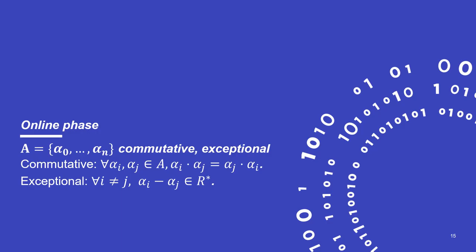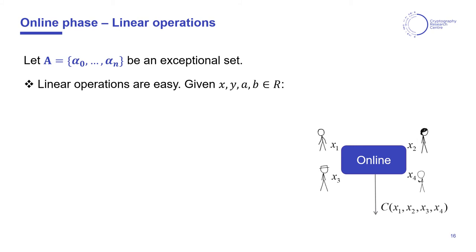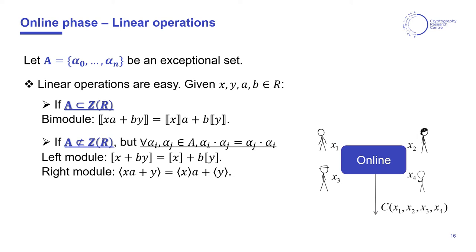Now that we have our secret sharing scheme, let's see how the online phase of our protocols looks like. Linear operations will be local, according to the module structure inherited by the choice of the set of evaluation points. If these are contained in the center of the ring, we have a bi-module, and everything works as over finite fields. If the evaluation points just commute with each other, we have a left module, which we denote with these straight brackets, if interpolation is according to evaluation on the right, and we have a right module, which we denote with angle brackets, if we interpolate according to evaluation on the left.